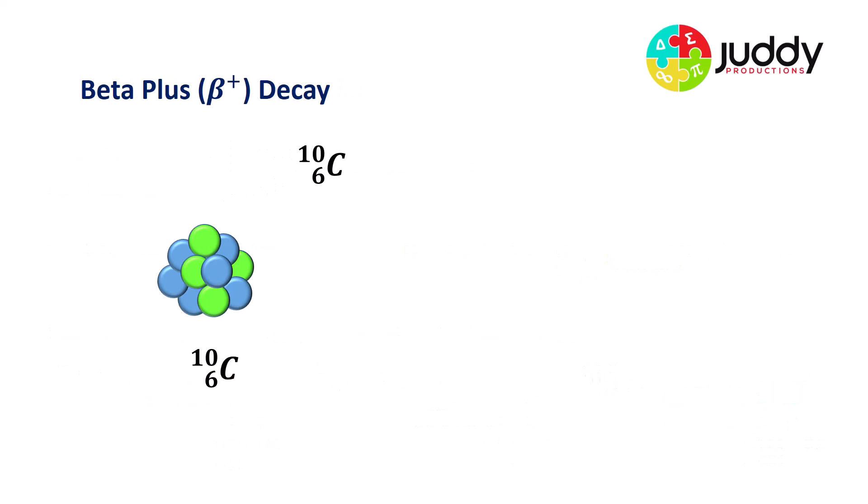So let's have a look at beta plus decay. You have on the screen in front of you a carbon 10 nuclei, consists of six protons and four neutrons, making up a total mass number of 10. And it's a relatively unstable nucleus, and it readily undergoes beta plus decay. So during beta plus decay, we see that the carbon 10 nuclei has transformed into a boron 10 nuclei. It's actually changed its nucleus into a new element altogether. And in doing so, it's emitted two quantities.